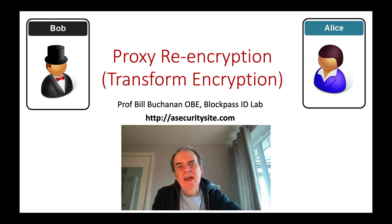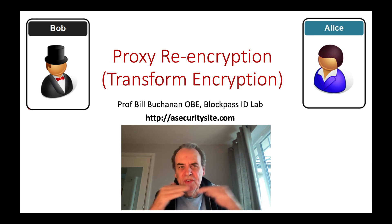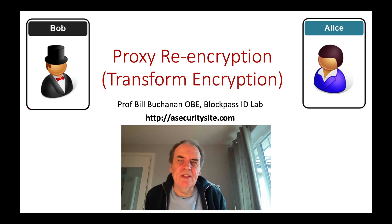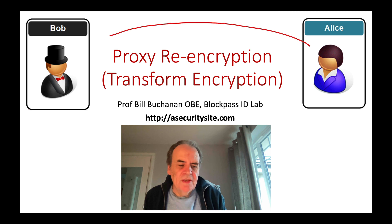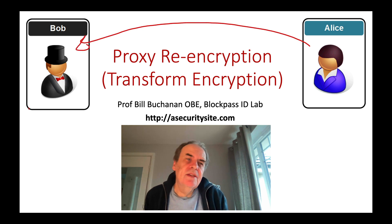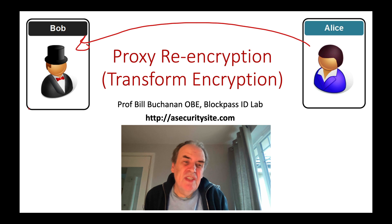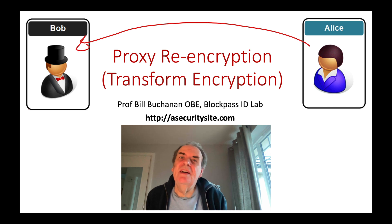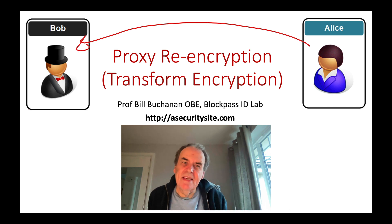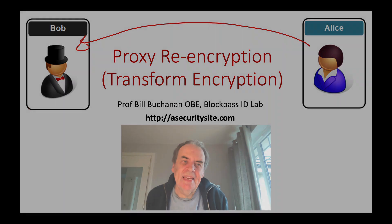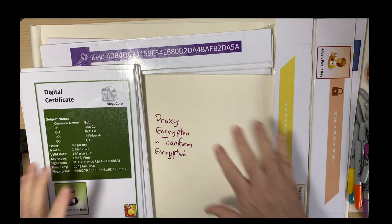Let's look at proxy re-encryption or transformation encryption. What we'll find is that it's a way for Alice to pass to Bob a secret, a cipher, or a protected encryption key.